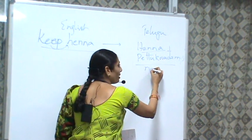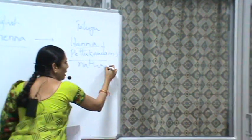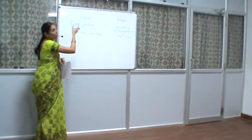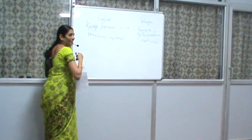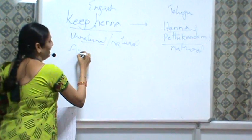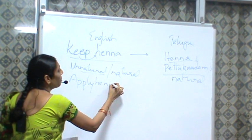Is this a natural combination for us? We say 'henna pettadam' — this is a natural combination for us. But do you think this is a natural or unnatural combination in English? It is an unnatural combination. So 'keep' and 'henna' in English, they don't go together. So what can we say? In order to make it correct, an acceptable combination — exactly: applying henna. You apply henna to your hair and you don't keep henna.